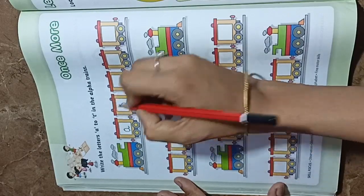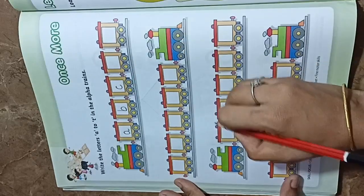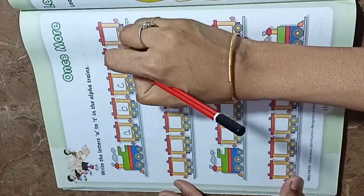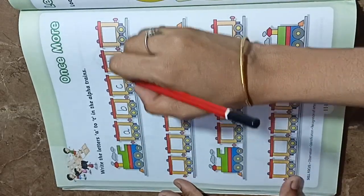Okay, let's start. First we will write a small a, b small b, small c, then small d. A, B, C, D.